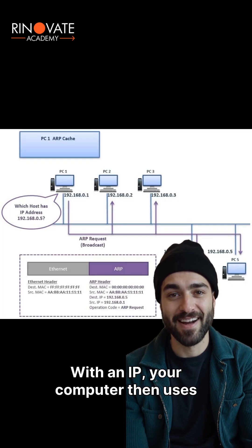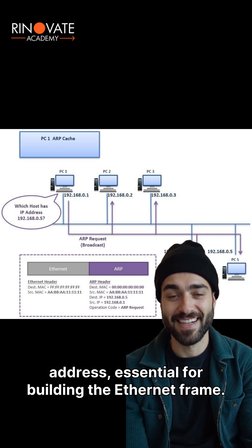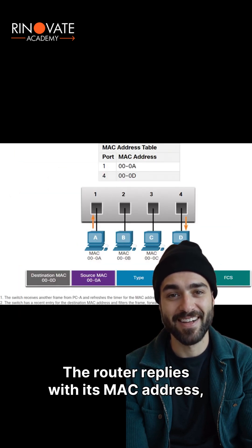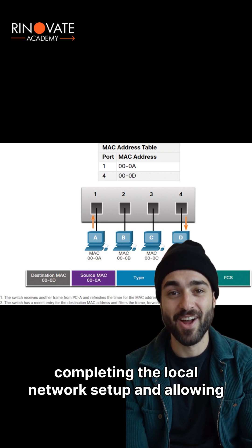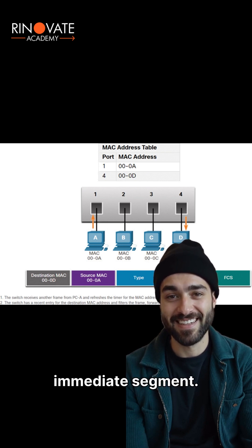With an IP, your computer then uses ARP to find the router's physical MAC address, essential for building the Ethernet frame. The router replies with its MAC address, completing the local network setup and allowing your computer to send data beyond its immediate segment.